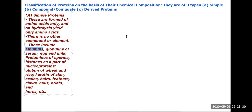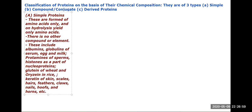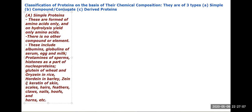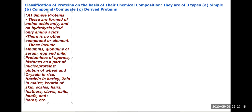Further examples include albumins, globulins, egg and milk proteins, protamins of sperm, histones, gluten of wheat, orizein in rice, hordein in barley, zein in maize, keratin, and others. All these are simple proteins, meaning they have no additional group, element, or compound.